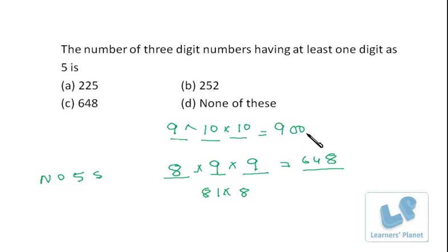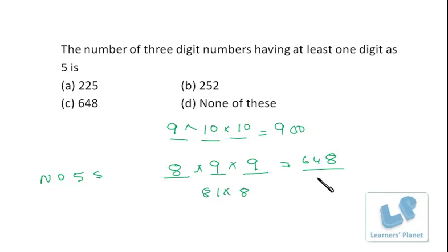So in all, 900 numbers exist, of which 648 numbers have no fives at all. That means in the remaining numbers, there will be at least one five — there may be one five, two fives, or all three fives. So 900 minus 648 equals 252. There are 252 numbers in which at least one five will be there.